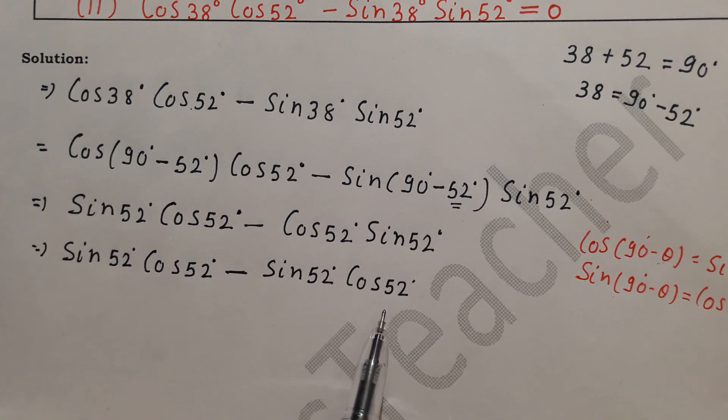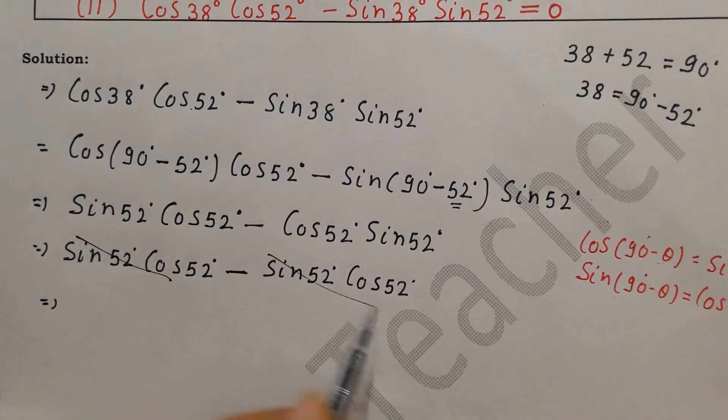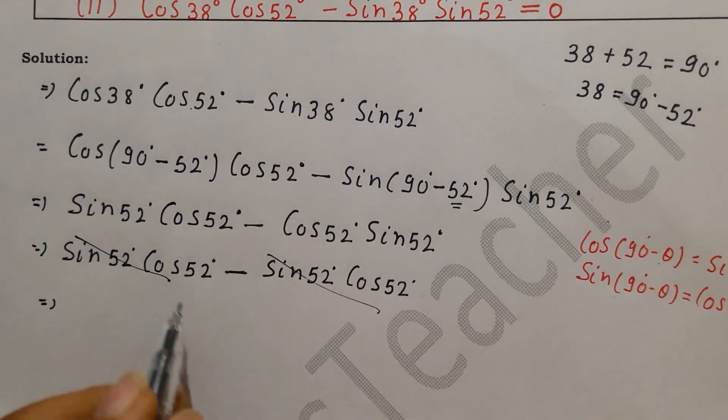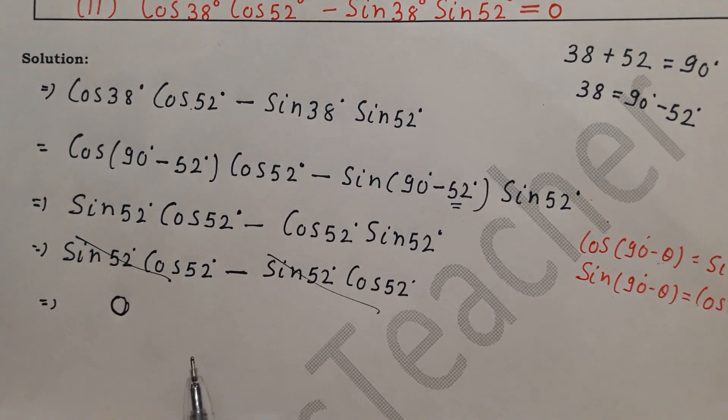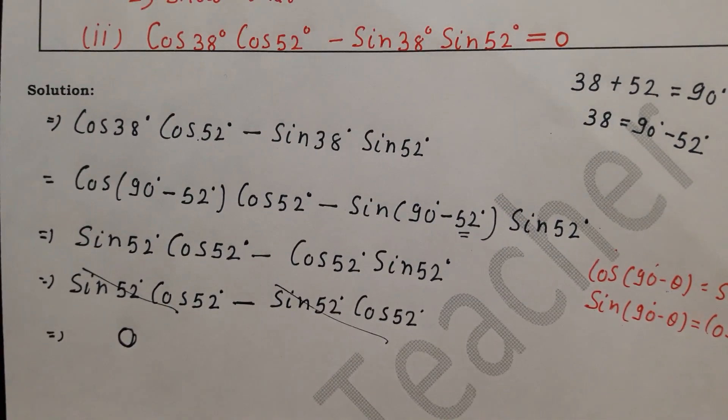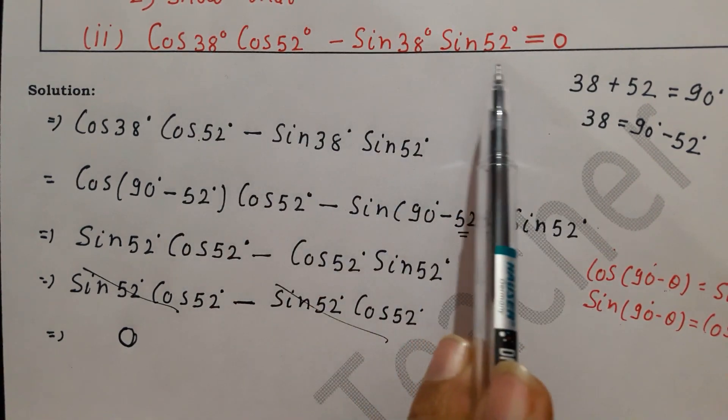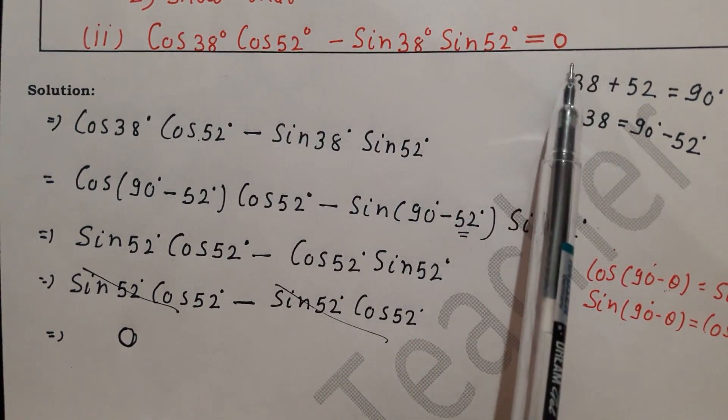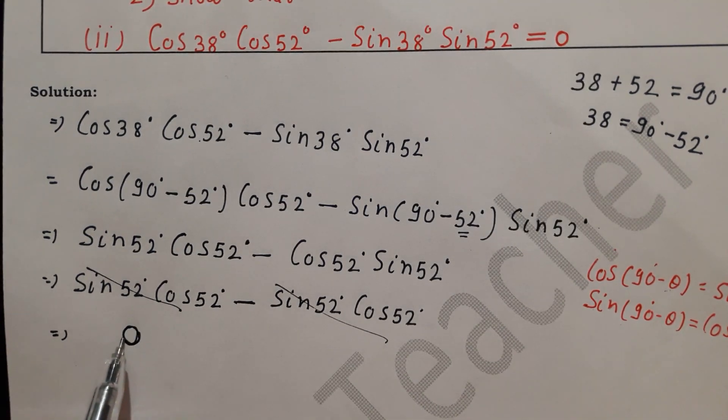So this entire term cancels. Cancel means 1 minus 1, how much? 0. So the question equals how much? 0, which we had to prove. We had to solve this term and calculate that its value is 0. So here we have solved it as 0.